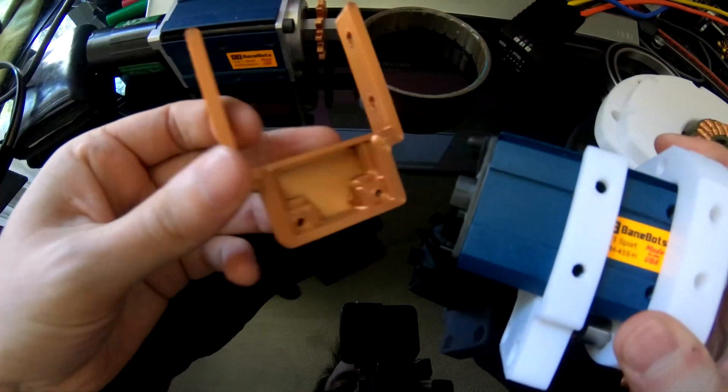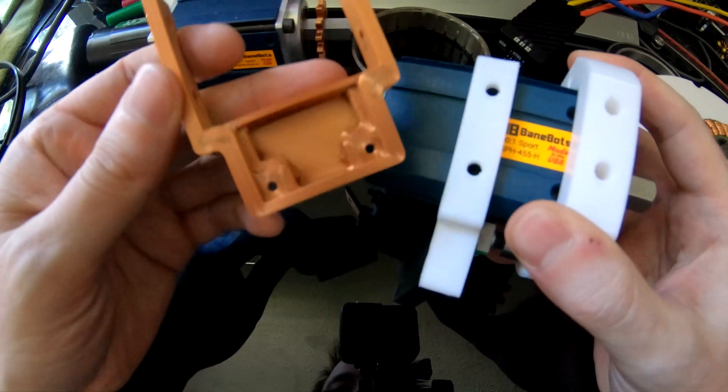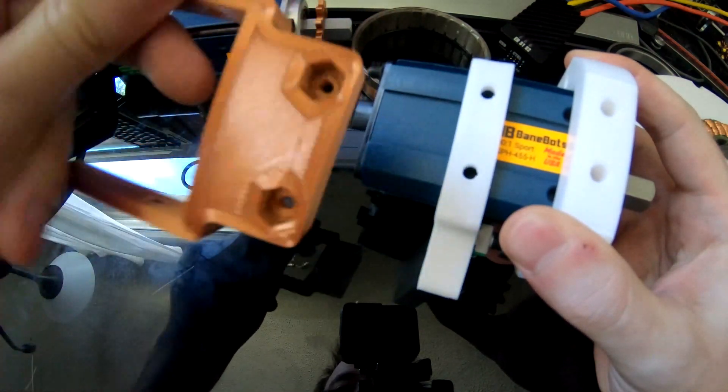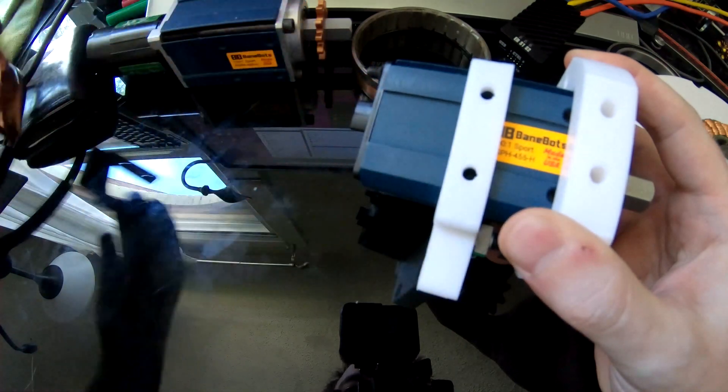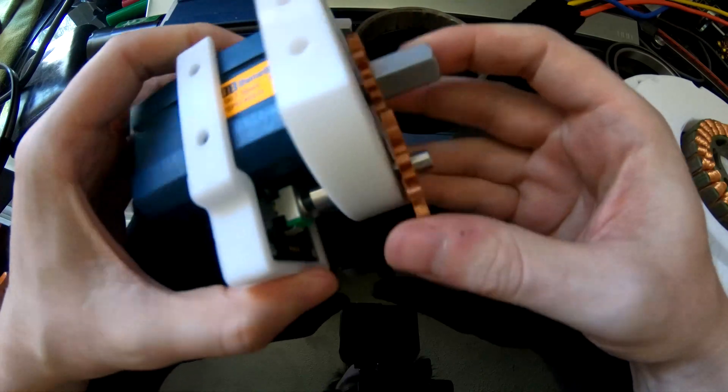I have this 3D printed part that attaches to the gearbox and then the potentiometer fits in there nice and snug and gets screwed in. We'll have some nuts on the other side that'll screw into it. I've been 3D printing that, just making sure it fits.